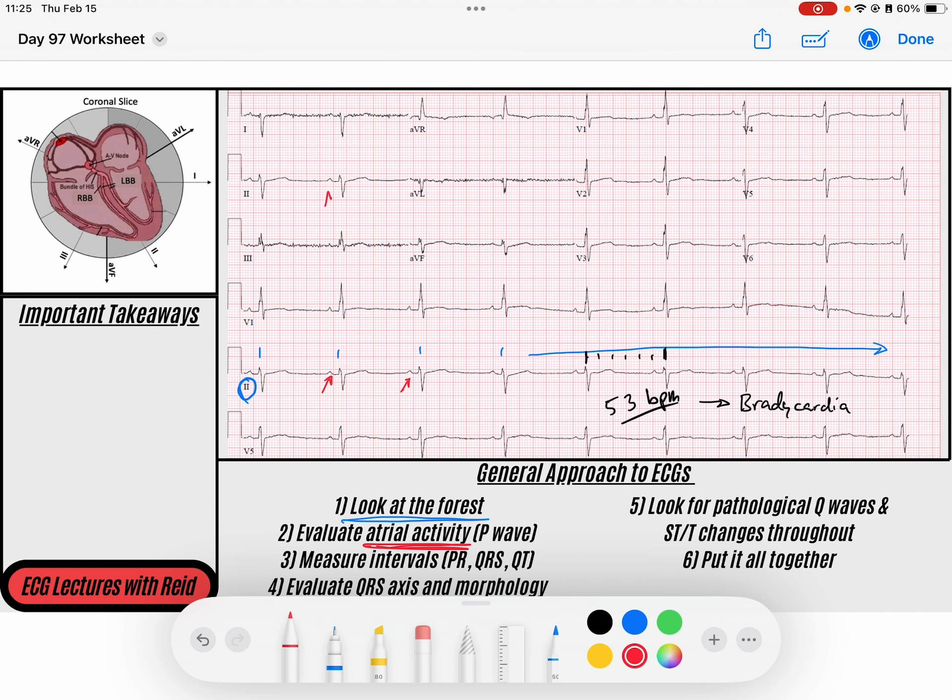My P waves, if I scan up here, are upright in lead 1. There's a little bit of artifact in lead 1, but you can see an upright deflection. And then you can also see an upright P wave here in AVF. It tells me that my atrial depolarization is occurring in the down and to the left direction, which is normal for sinus node. So this is a sinus P wave.